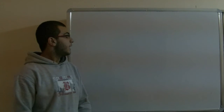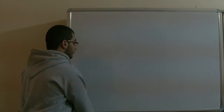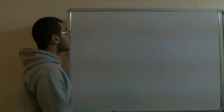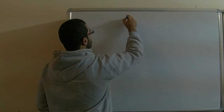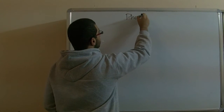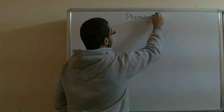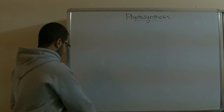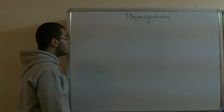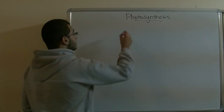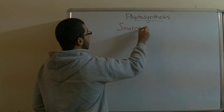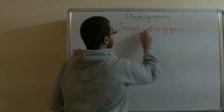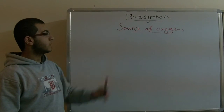Hello and welcome back. Last time we talked about the structure of the leaf plant, and today we will talk about photosynthesis in another way. We will know today the source of oxygen that evolves during the photosynthesis process.